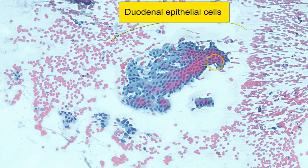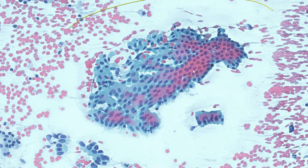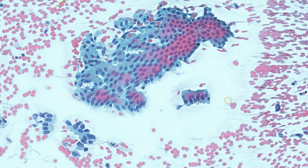Here is a honeycomb sheet of duodenal epithelial cells, and we often see these cells in head of pancreas lesions where the needle traverses the transduodenal route. Again, strikingly uniform and honeycomb in arrangement, and the nuclei are very uniform in size. We can even see that the polarity of the nuclei is maintained in this strip of columnar cells.